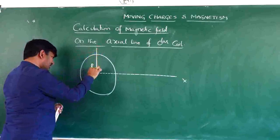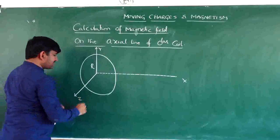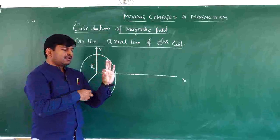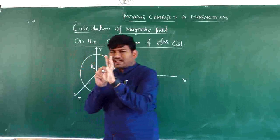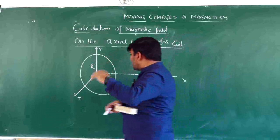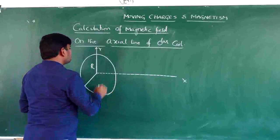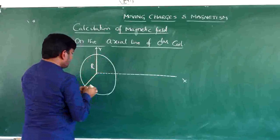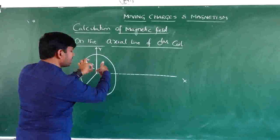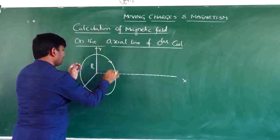The coil is in the yz-plane — this is the y-axis and this is the z-axis. The coil is like this, and this is the axis of the coil. The axial line is the line passing through the center of the coil and perpendicular to its plane. Through this coil, a current is passing in the anti-clockwise sense.